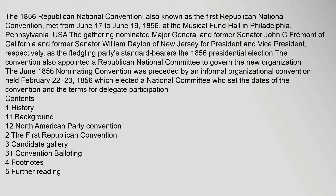The June 1856 nominating convention was preceded by an informal organizational convention held February 22–23, 1856, which elected a national committee who set the dates of the convention and the terms for delegate participation.